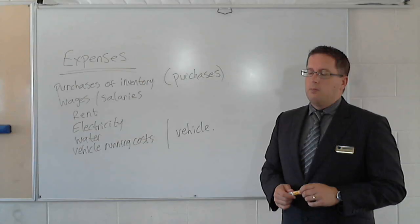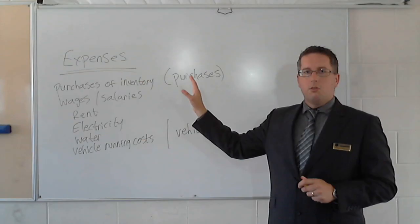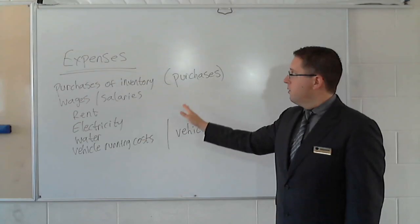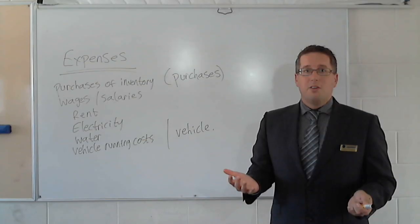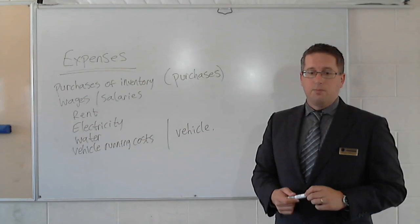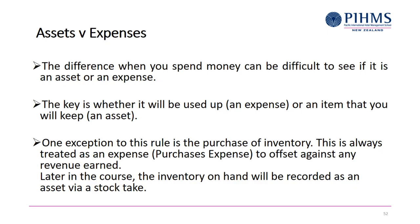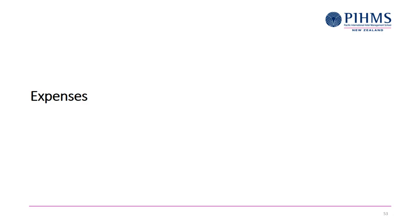For this level, purchases of inventory are treated as an expense, simply called 'purchases.' It's a running cost to the business and is offset against any revenue earned. Anytime you see a purchase of inventory, purchase of goods, or purchase of something that's going to be sold to a customer, it's always going to be an expense. For example, a restaurant buying inventory wants to sell those items within the next year — otherwise you have a lot of old stale food.